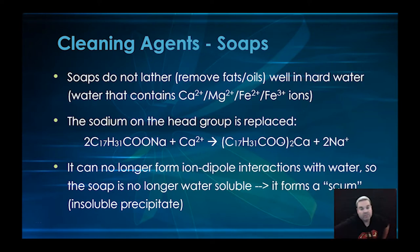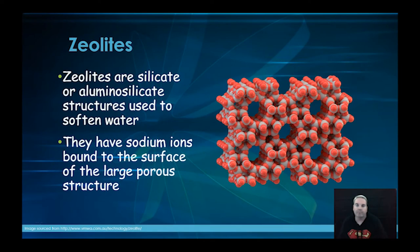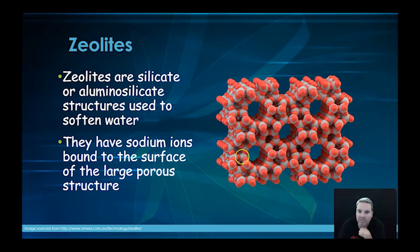What we're looking to do is reduce that hard water formation because it reduces the effectiveness of our soaps, means we have to use more of it, and also has monetary implications. Some of the modern things being used are called zeolites — silicate or aluminosilicate structures used to soften water. Here's an example with silicon in the middle.